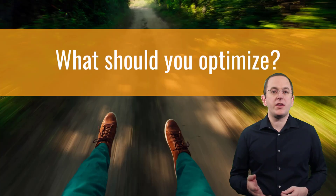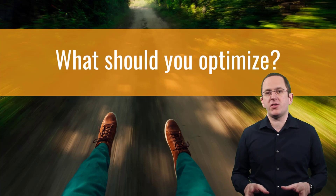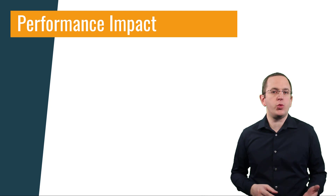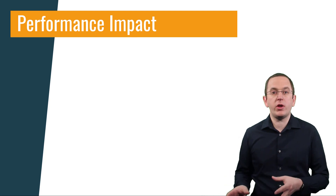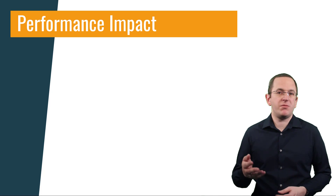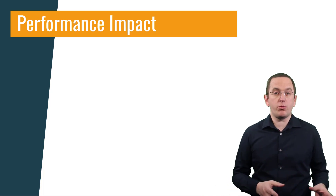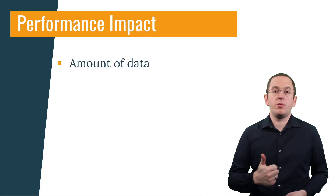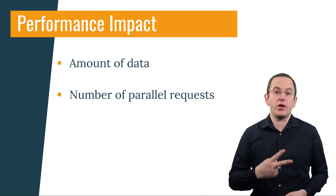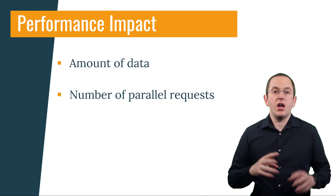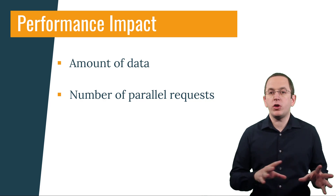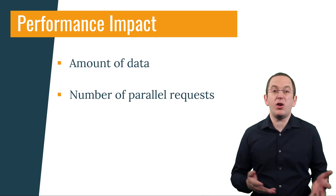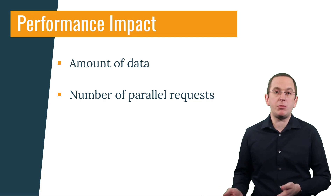There's an obvious answer to that question — optimize the parts that are too slow. But how do you find these parts? You will not find them by reading about best practices or following the recommendations from static code analyzers. That's not because these things are generally wrong — it's because both approaches lack two important pieces of information: the amount of data you are working with and the number of parallel requests your system has to handle. Both have a strong impact on your application's performance, or the inefficiencies you can accept in your code.